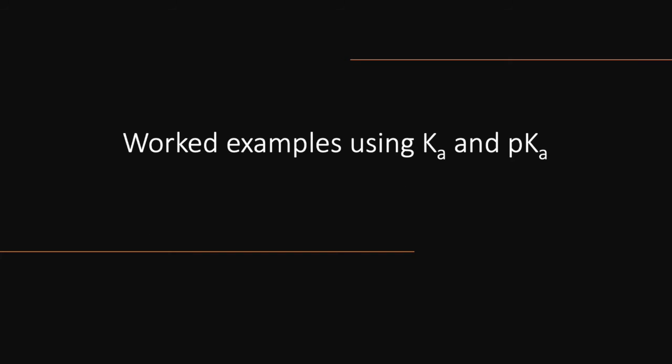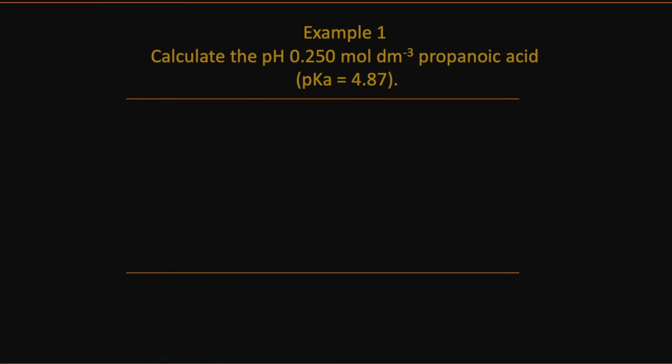So we're now looking at some worked examples using Ka and pKa. We're going to calculate the pH of some propionic acid. We've been given pKa and its concentration. Because we don't know Ka, we only know pKa, we need to find Ka, which we do by taking 10 to the power of -pKa. And that gives us a Ka value of 1.35 × 10⁻⁵.